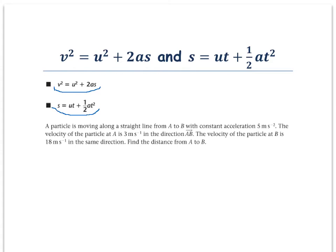Let's read this question and go through and underline it and use our underlinings to help us draw a diagram. A particle is moving along a straight line from A to B with a constant acceleration of 5 metres per second squared. The velocity of the particle at A is 3 metres per second in the direction of AB. The velocity of the particle at B is 18 metres per second in the same direction. Find the distance from A to B. Let's go through and underline our key points: constant acceleration is 5 ms⁻², velocity at A is 3 ms⁻¹, and velocity at B is 18 ms⁻¹.